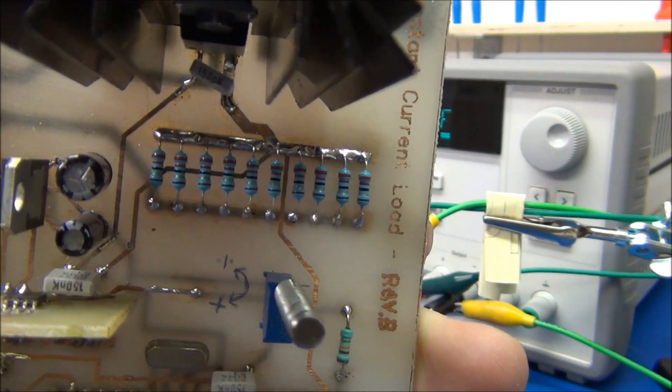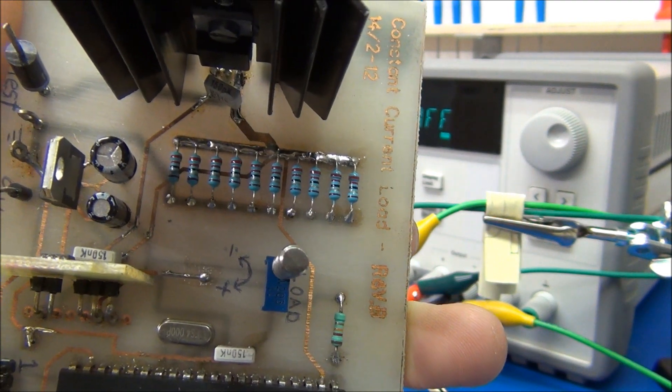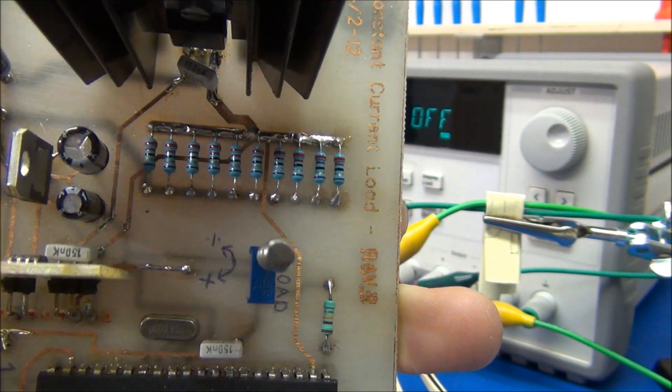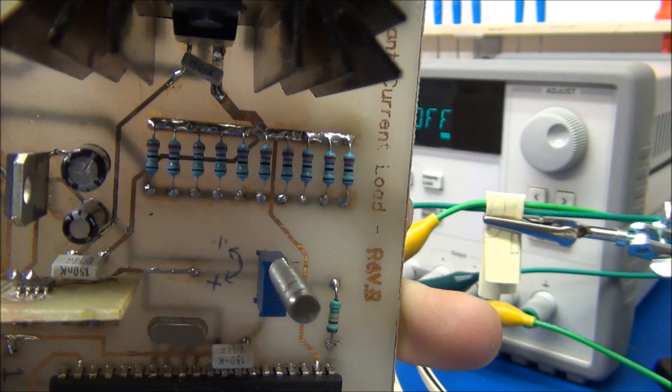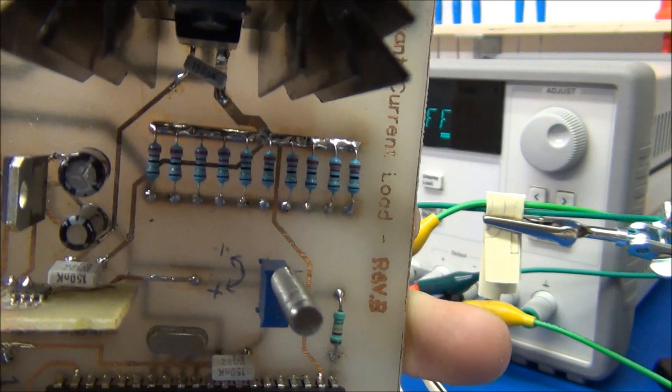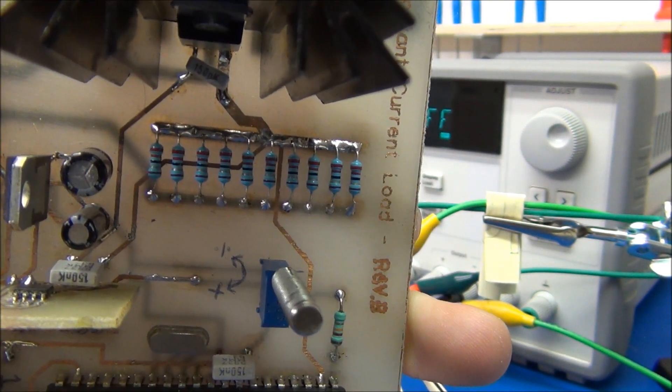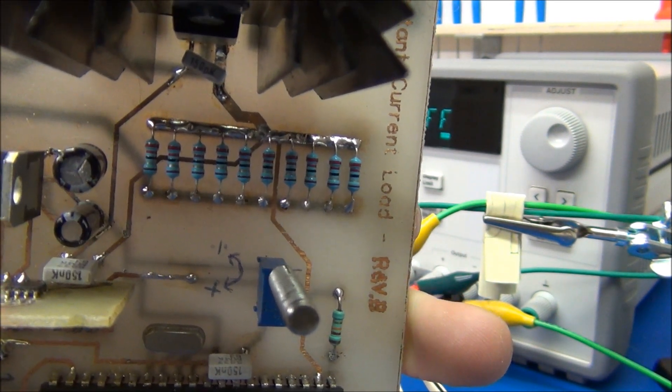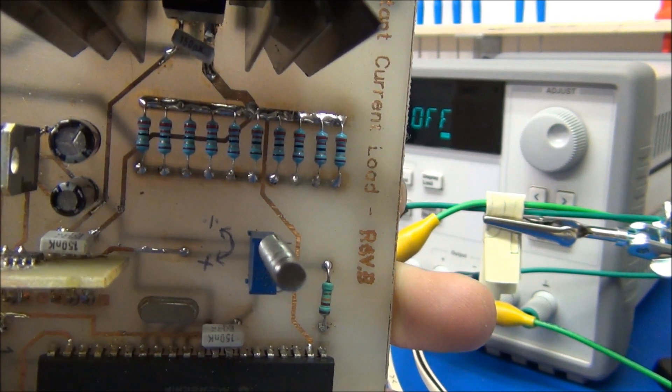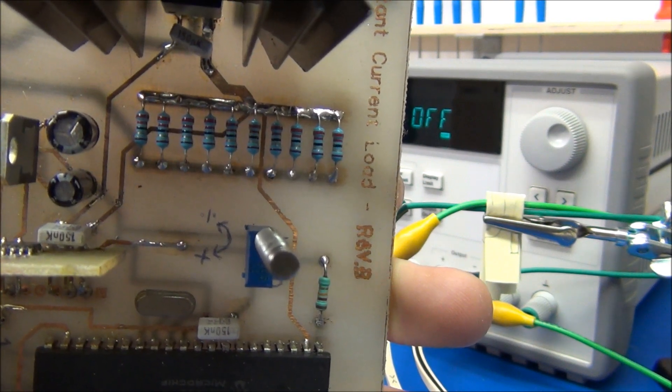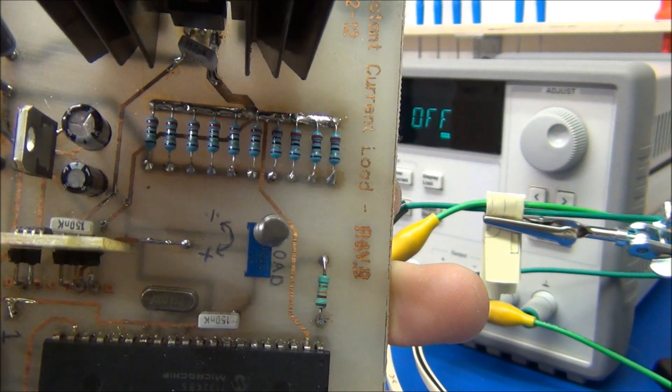You can of course find a figure in the data sheet telling how much these will change over temperature, but I don't have the exact data sheet for these resistors, and it's typically in the order of 25 to 100 parts per million. I thought we'd do a little test to check how much these actually vary over temperature.